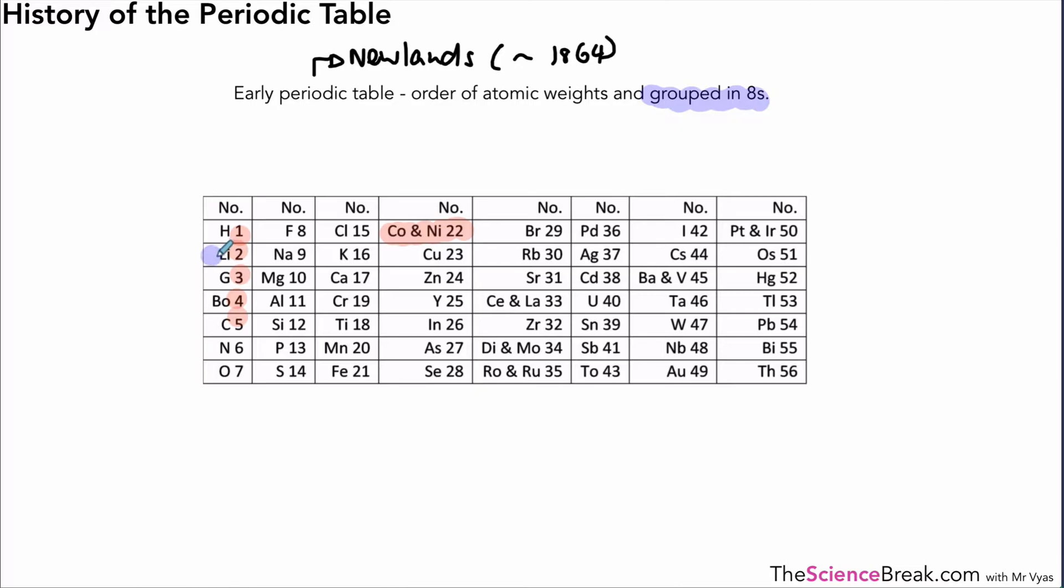But what we also noticed is that every eighth element had similar properties. So lithium, sodium, potassium had similar properties but there was a problem when you got to copper. Because that was the next one on the atomic weight list it was put in that particular group. Rubidium fits but copper does not. Copper however was left in that group because of the fact that it had an atomic weight that fitted in that group, and while it didn't have similar reactions it was actually a metal so it was thought just to kind of leave it there.